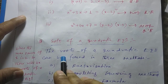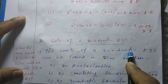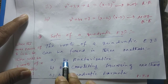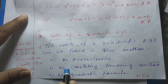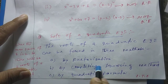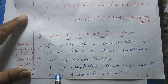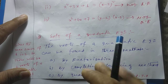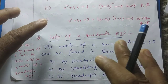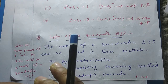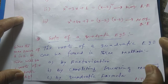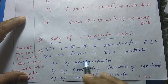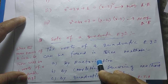The roots of a quadratic equation can be found by using three methods. The first method is the method of factorization. The second one is by the completing the square method. And finally the third method is by using the quadratic formula. We shall be learning every method one by one with proper examples.